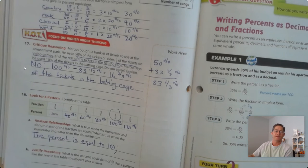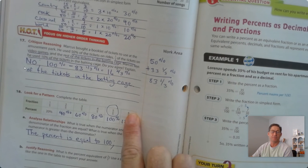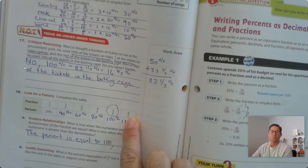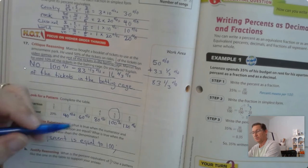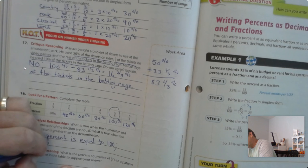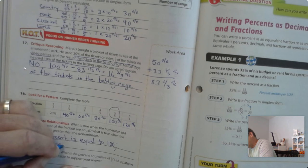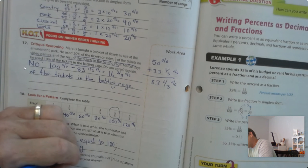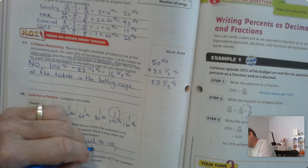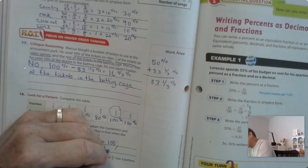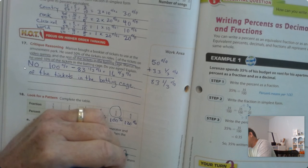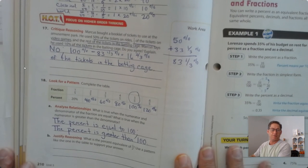What happens when the numerator is greater than the denominator? Well, then our percent is greater than 100.